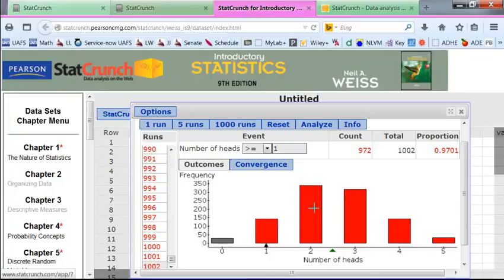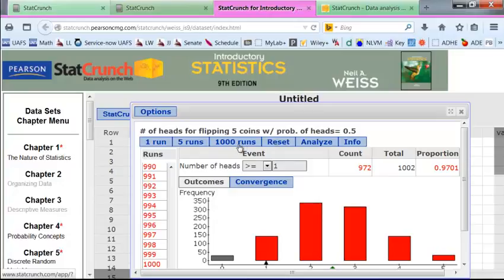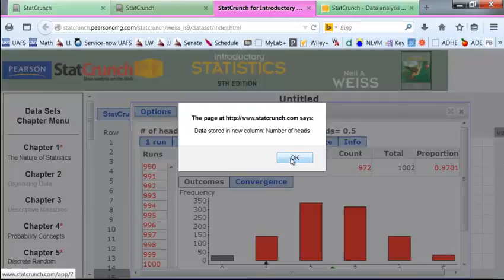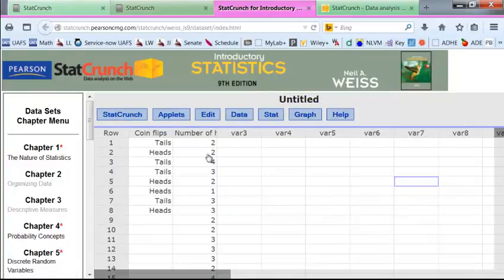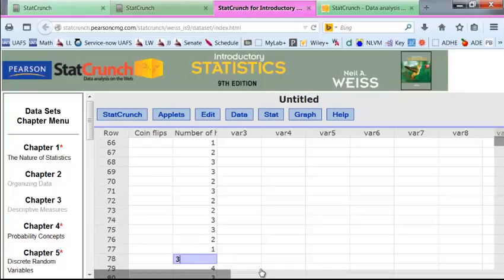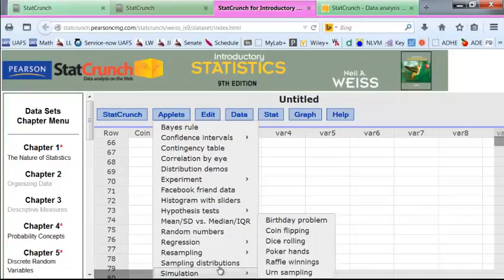And this shows us the number of heads in that one thousand two samples. 972 of them have at least one head. And you can see, we could reset it. Or we could also click on analyze, and let's see what happens there. We can see the number of heads here, each time, and this is going to go down to over a thousand and two, I guess. So we can look at, we can generate some coin flips, and we can weight our coin as well.